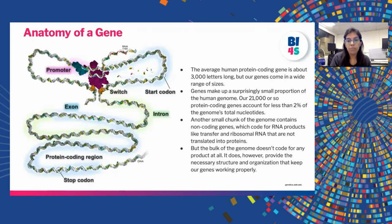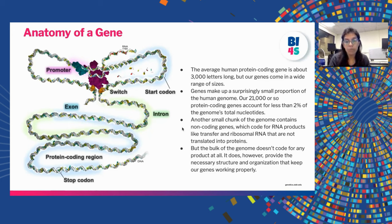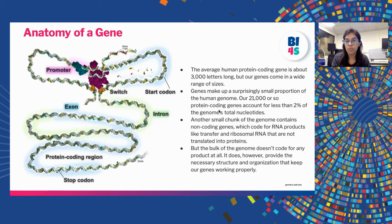Genes are best known as the instructions for building proteins. However, only a portion of the nucleotides in a gene actually code for the protein itself. Other parts of the gene, like the promoter, provide additional information — including sequences that control when, where, and how much protein to make. The average human protein-coding gene is about 3,000 letters long, but genes come in a wide range of sizes. Our roughly 21,000 protein-coding genes account for less than 2% of the genome's total nucleotides. Another small chunk contains non-coding genes, which code for RNA products like transfer and ribosomal RNA. But the bulk of the genome doesn't code for any product at all, though it provides necessary structure and organization.